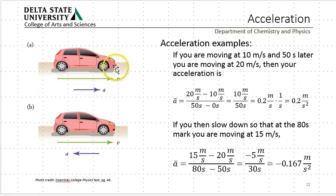So, acceleration and velocity do not have to be in the same direction. In the first example, they're in the same direction. In the second example, they're in opposite directions. In the first example, the car is speeding up. In the second example, the car is slowing down. All right, that's it for part two.